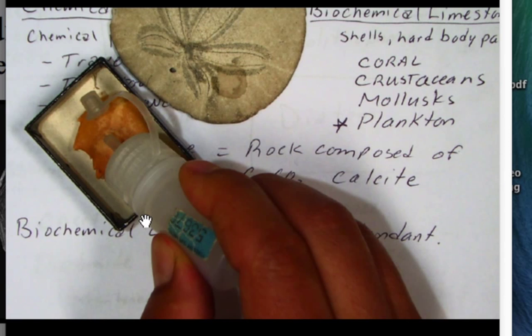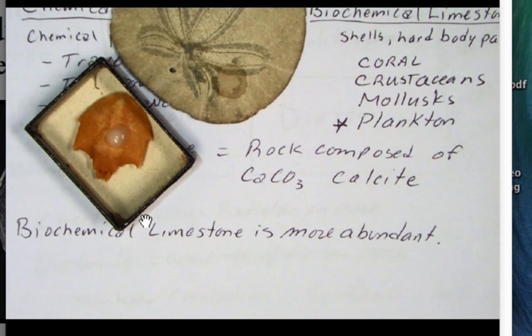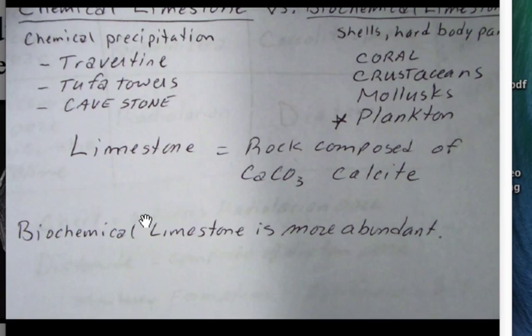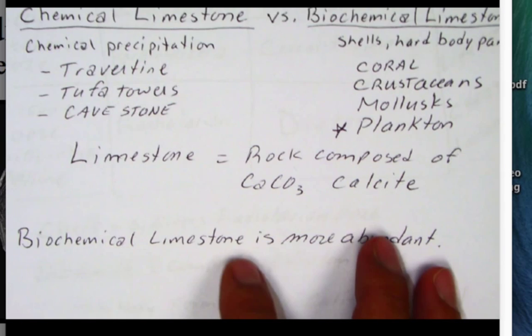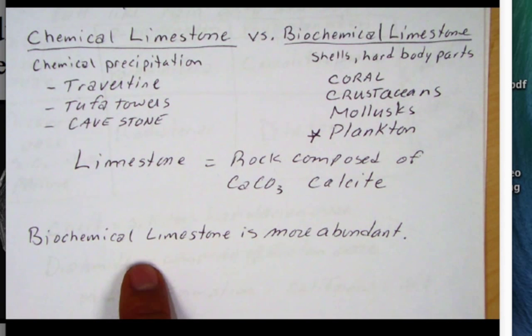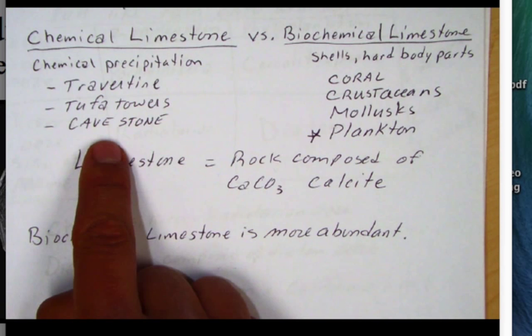These are organisms that are making their hard body parts out of calcium carbonate — the same for clams and snails, and coral as well. One question I ask is: which limestone is more abundant, the chemical limestone or the biochemical limestone? Biochemical limestone is more abundant. It forms mostly in the ocean, which is a large area of our planet, whereas chemical limestones are more restricted to local areas, like hot springs, springs under Mono Lake, or caves.